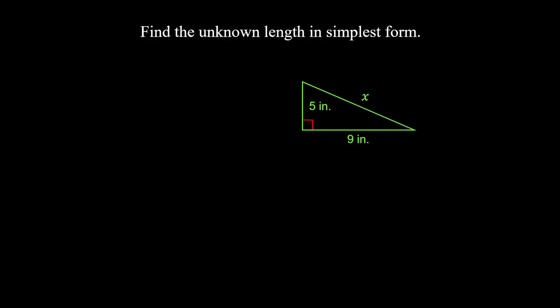To find the unknown length of the right triangle, we use the Pythagorean theorem. A and B represent the two legs that form the right angle, and C is the hypotenuse, which is opposite the right angle. Substitute 5 for a, and 9 for b, and x for c.